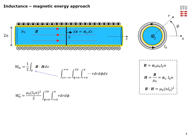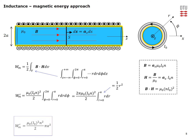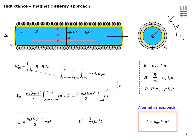The integral in phi simply yields a multiplication by 2π, and the remaining integral in r is straightforward to perform. Inserting the integration limits gives the magnetic energy stored per unit length in the infinite solenoid configuration. This energy is linked to the inductance per unit length by the general relation W′ = ½·L′·I₀², from which we isolate the inductance per unit length, arriving at the very same result as on the previous slide.